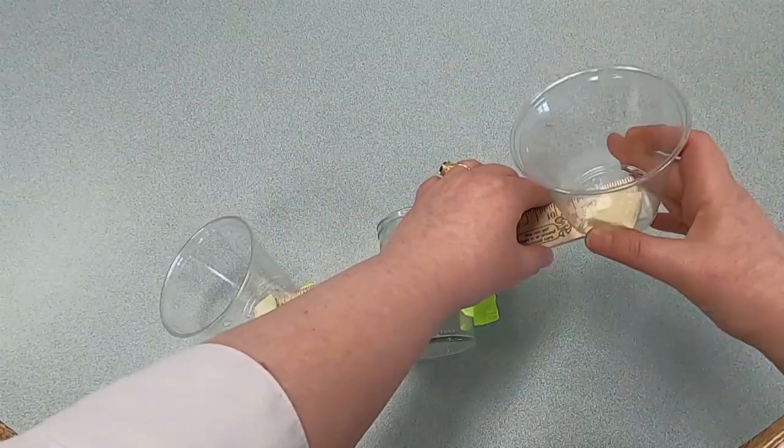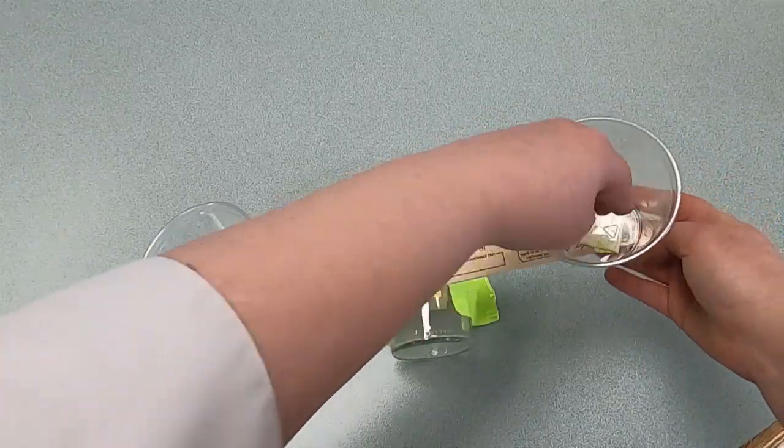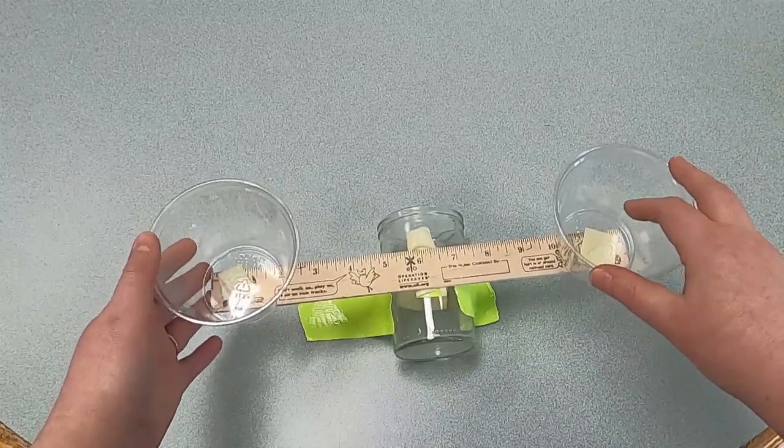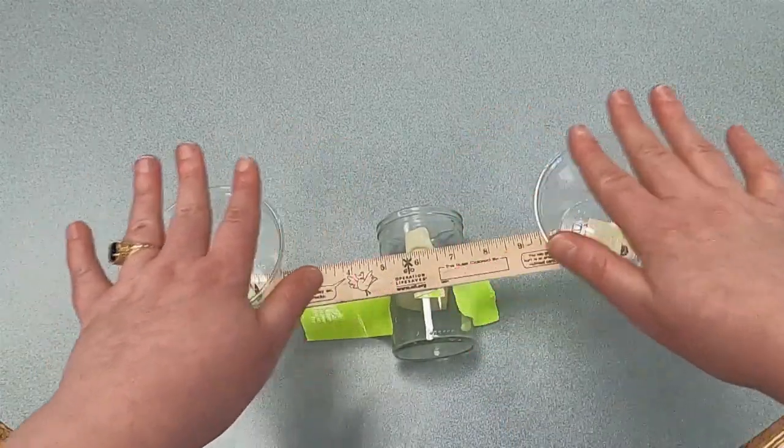But let's make those sides equal again. You just want to make sure it's secure because we're about to put some items in our cups. There we go. We're back on balance again. Both sides are level or the same.